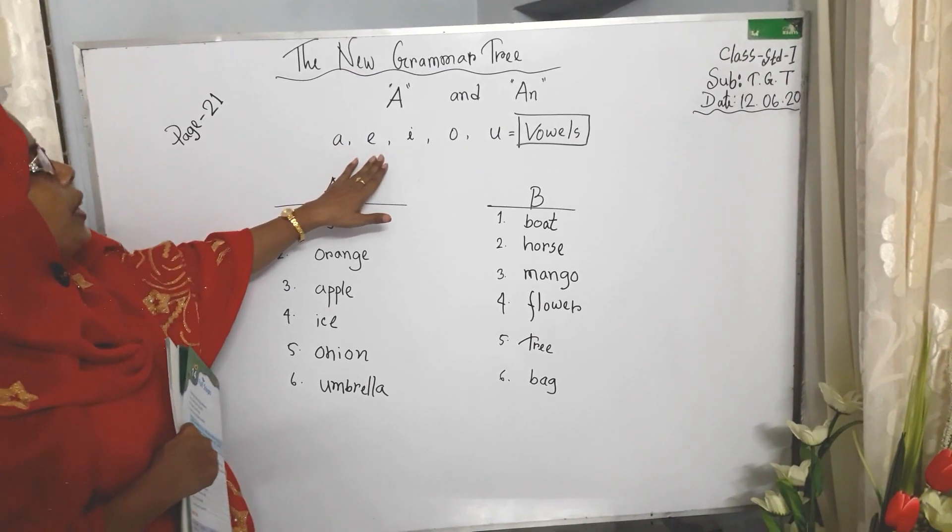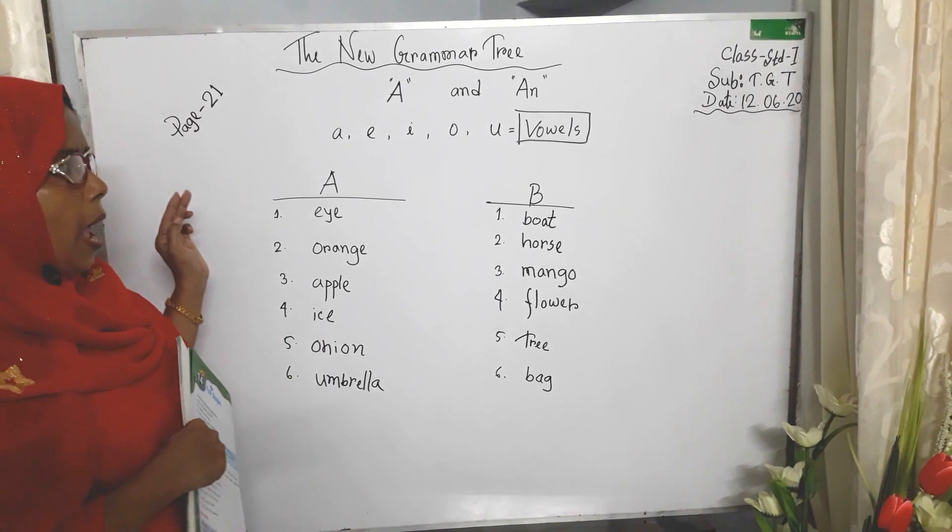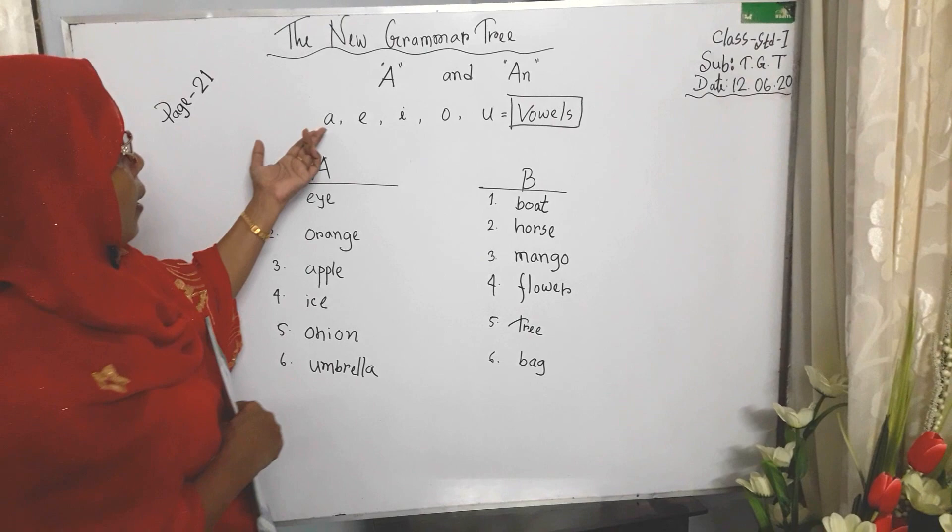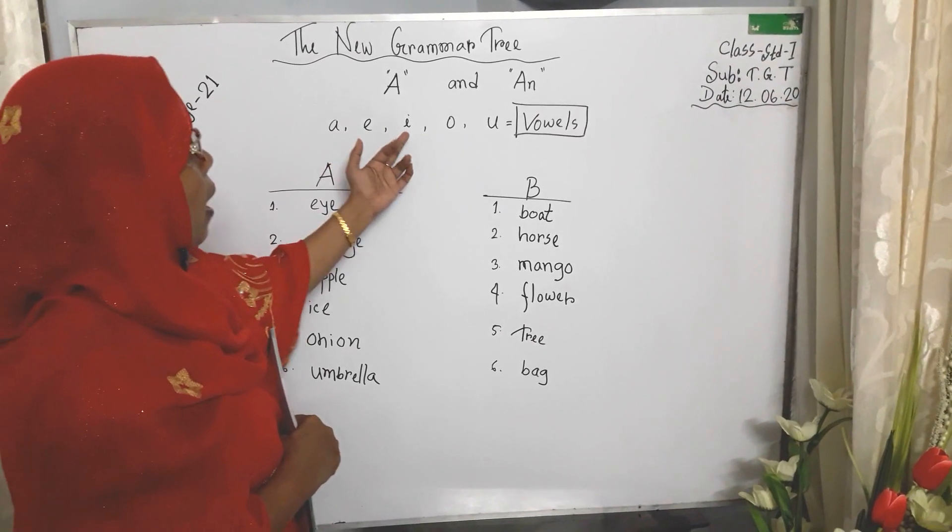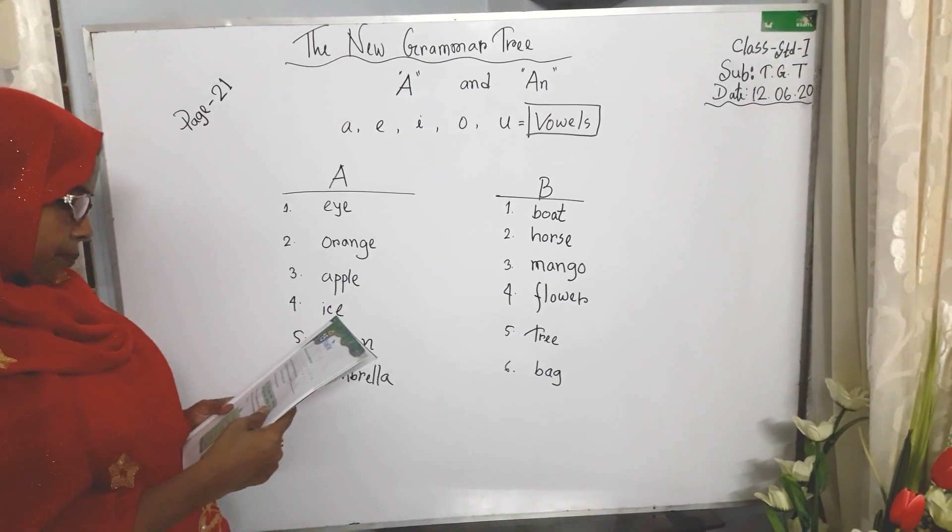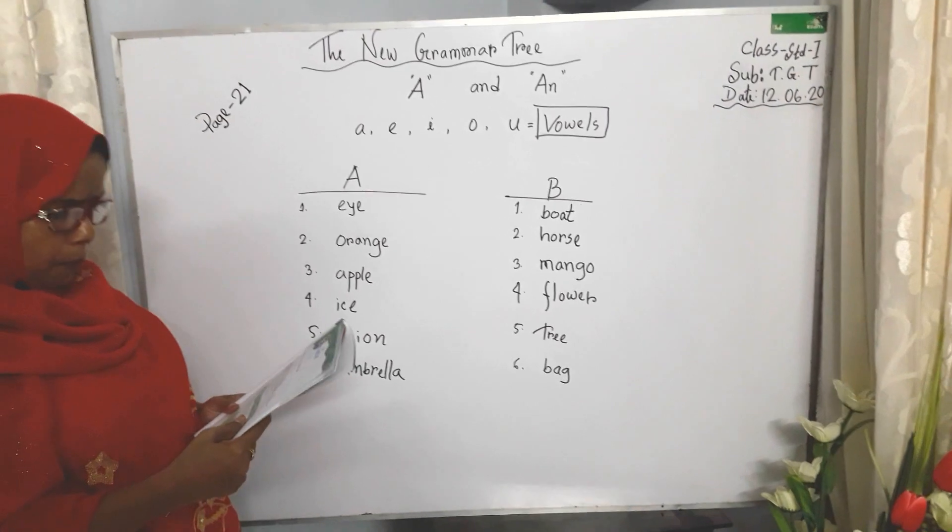A, E, I, O, U. Okay? We learn again and again: A, E, I, O, U. These five letters are called vowels.